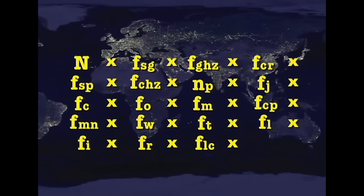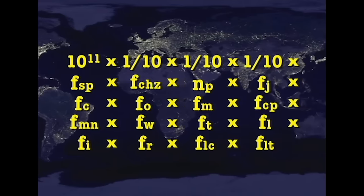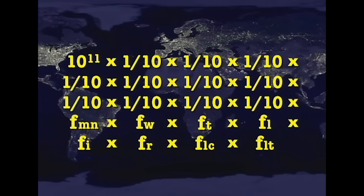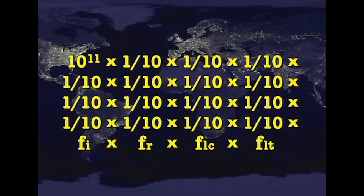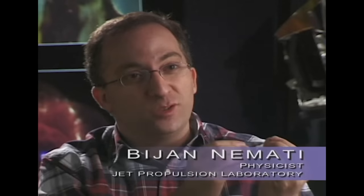In an attempt to estimate the probability of attaining this combination of factors simultaneously, some researchers have developed equations assigning a conservative one-in-ten value to each factor deemed necessary for advanced life. If every element has to be there at the same time, you have to multiply the probabilities, and that's what makes the probability at the end so small.